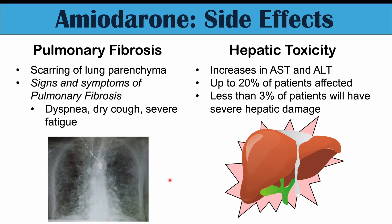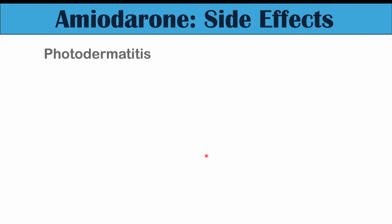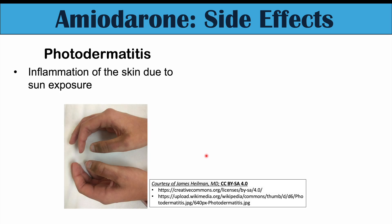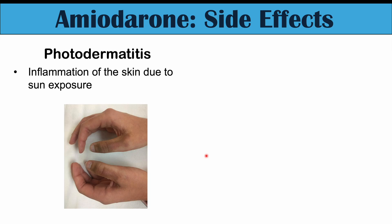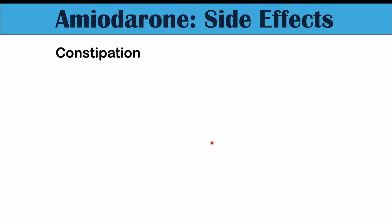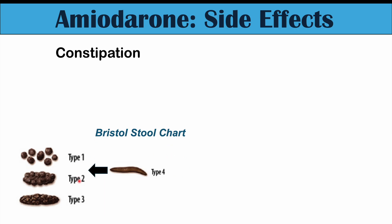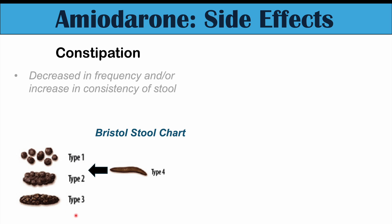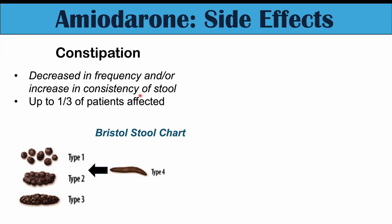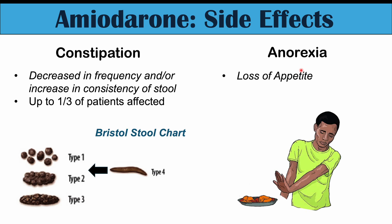Other side effects include photodermatitis — inflammation of the skin due to sun exposure — where patients on amiodarone are more sensitive to the sun. Skin deposits can also occur, generally on sun-exposed skin. Gastrointestinal symptoms include constipation — a decrease in frequency and/or increase in consistency of stool — affecting up to a third of patients. Anorexia, or loss of appetite, can also occur in up to a third of patients.